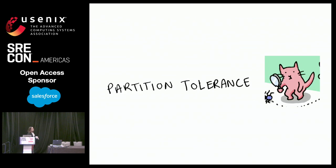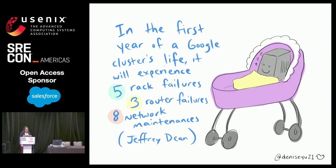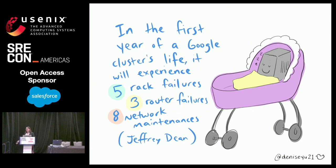We'll finish by zooming in on why partition tolerance is so difficult to design for. In short, partitions are inevitable. In the first year of a Google cluster's life, it will experience five rack failures, three router failures, and eight network maintenances. Google is a company that's fairly good at keeping things online, but you can't avoid this kind of thing. Your hardware is just going to fail eventually.